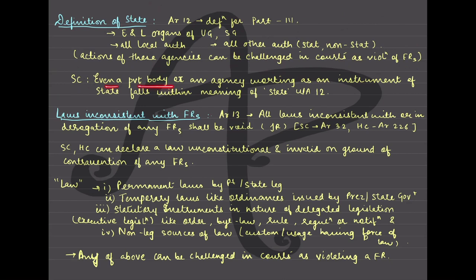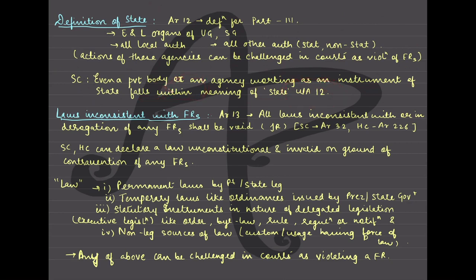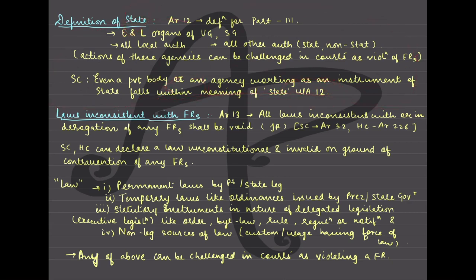The Supreme Court has said that even a private body or an agency working as an instrument of the state — even if it is not a government body, if it is a private body or some agency working as an instrument of state — will also fall within the meaning of 'state' under Article 12. So all of these will encompass your definition of state.